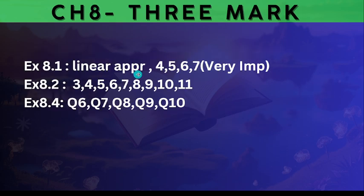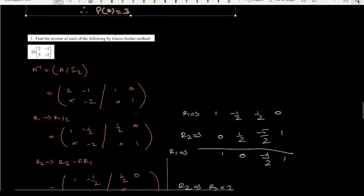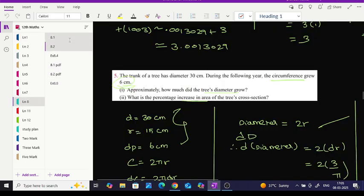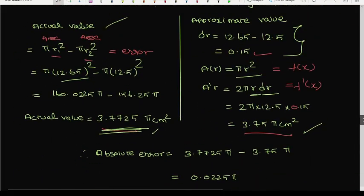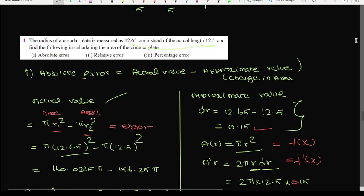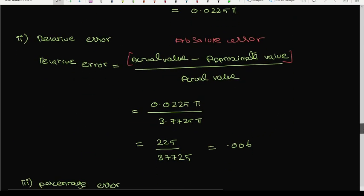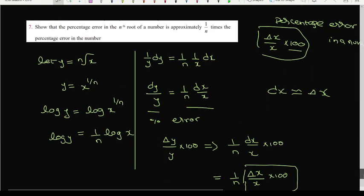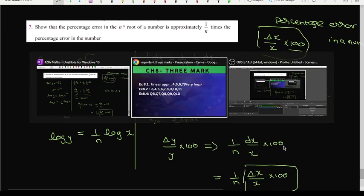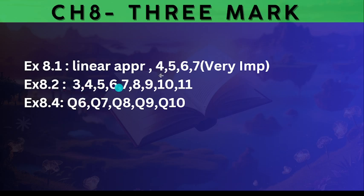Chapter 8, linear approximation very very important. 2 mark, 3 mark exercises 4, 5, 6 sum. 8.1, change in errors, circular plate very important question circular plate based. 4th sum, 5th sum a sphere sum, 6th sum time t, 7th sum percentage error. So in the sum 3 mark one, 99.9% chances are there, same type of sum 4, 5, 6, 7th sum.